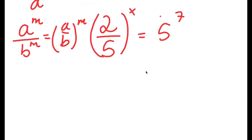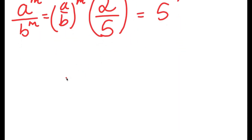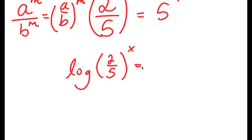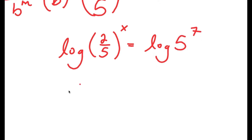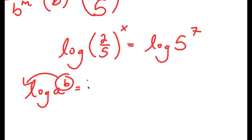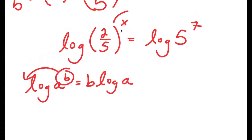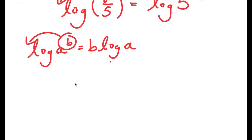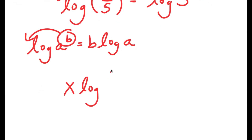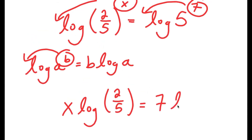From here, I'm going to take the log on both sides. So I get log of (2/5) to the power of x is equal to log of 5 to the power of 7. Using the power rule — if I have log a to the power of b, I can move the exponent b to the front to get b times log a. So I move x to the front on the left and 7 to the front on the right, giving x times log(2/5) is equal to 7 times log 5.